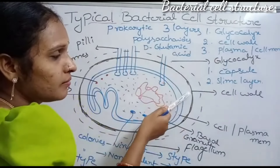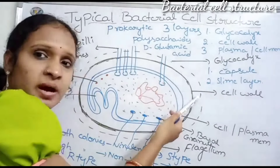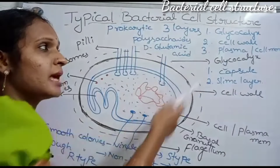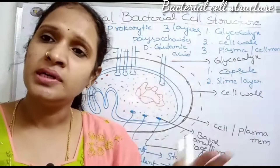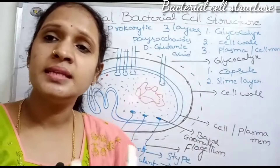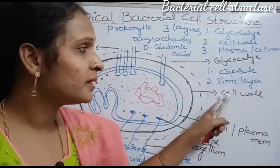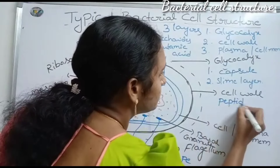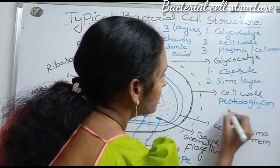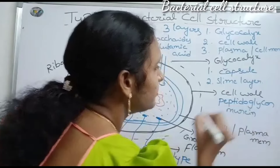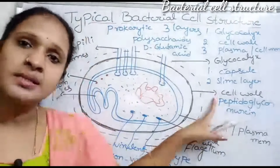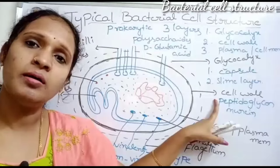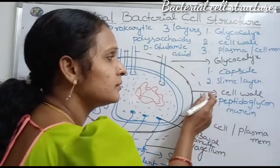The middle layer is the cell wall. It is external to the plasma membrane and below the capsule. In bacterial cells there is a rigid cell wall, which is why they can easily survive in all atmospheric conditions. The bacterial cell wall is made up of peptidoglycan and murein — this is very important for MSET students and other exams.